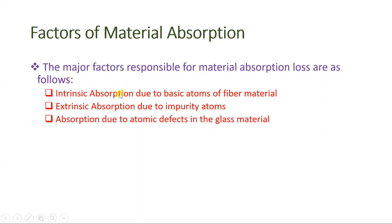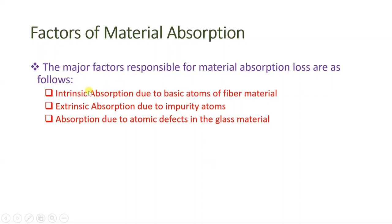If you observe the factors affecting material absorption, there are three major factors. One is intrinsic absorption, due to the basic atoms of the optical fiber material. Second is extrinsic absorption, which happens because we add some impurities to the fiber material. Third is absorption due to atomic defects in the glass material — during the fabrication process there are some defects in the material, and those atomic defects result in material absorption.